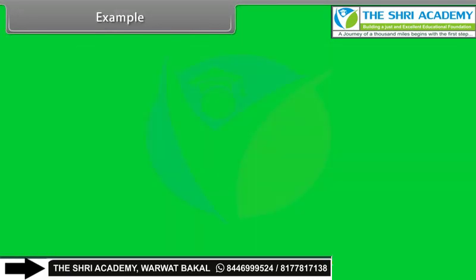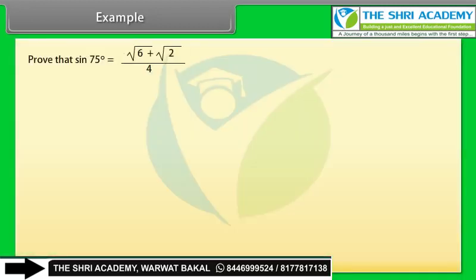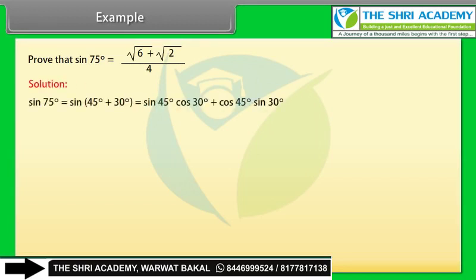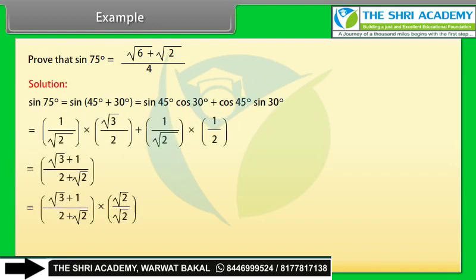Example: Prove that sin 75° = (√6 + √2) / 4. Solution: sin 75° = sin(45° + 30°) = sin 45°·cos 30° + cos 45°·sin 30°. By solving, we get (√6 + √2) / 4.